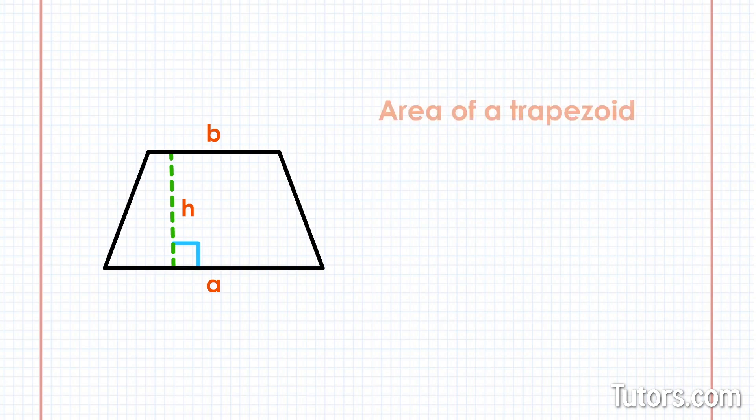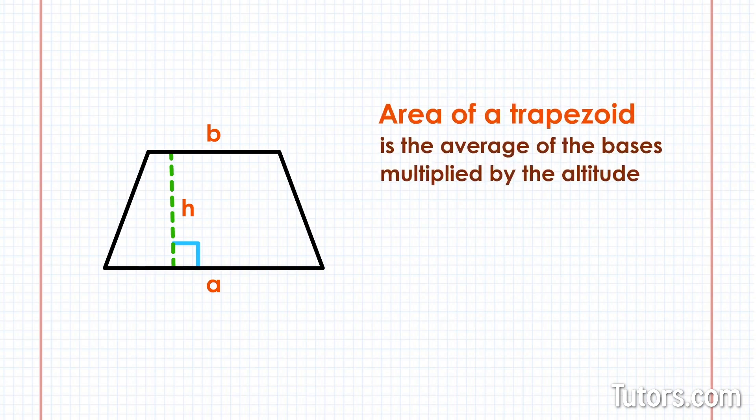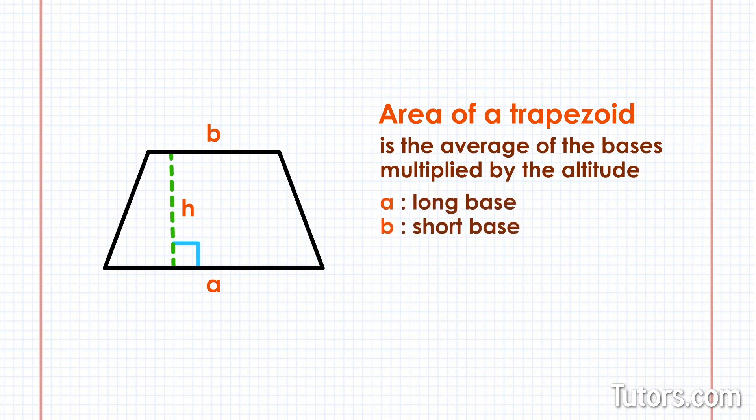The formula for the area of a trapezoid is the average of the bases multiplied by the altitude. In the formula, the long and short bases are A and B. The altitude is H. Area equals the sum of A plus B divided by two times H.